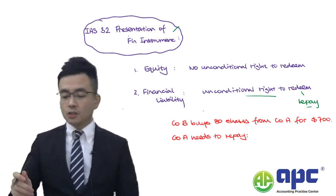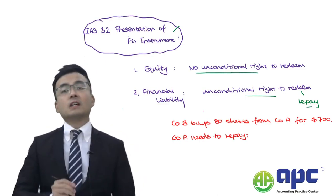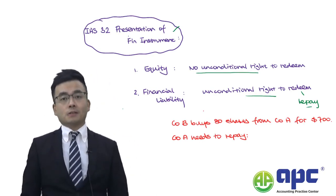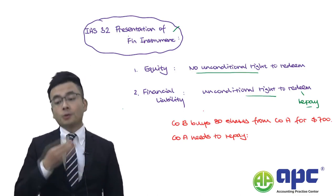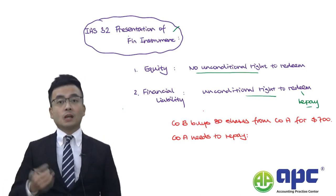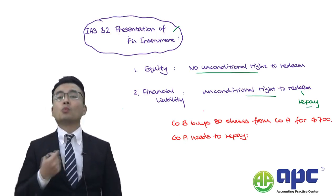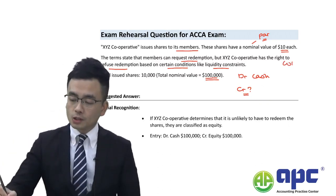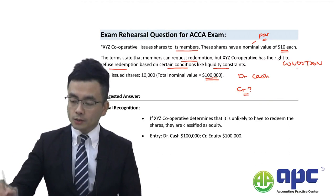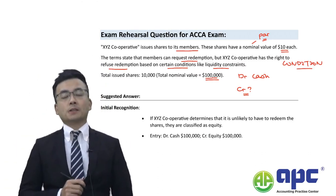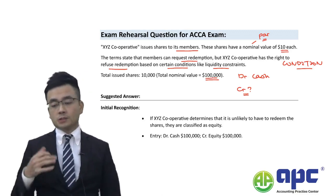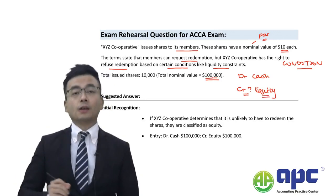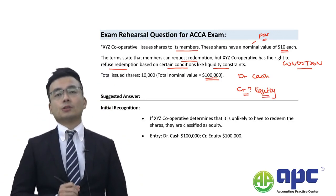Alternatively, if there is no unconditional right to redeem or repay — meaning the cooperative can refuse to repay for whatever reason — that is a conditional arrangement. In that case, it will be classified as an equity instrument. Here, since there is a condition on when the cooperative will pay the money back, it is not a financial liability but instead share capital, or equity, worth $100,000.